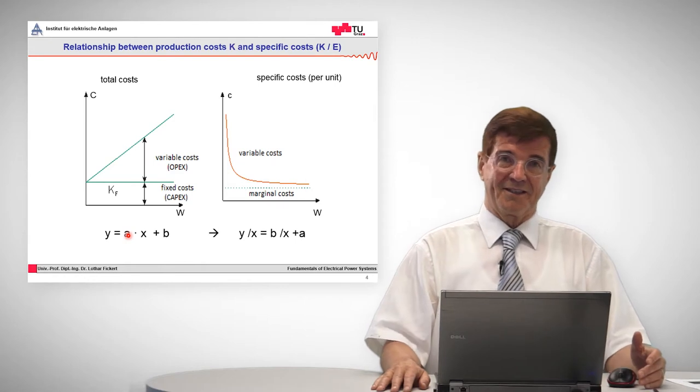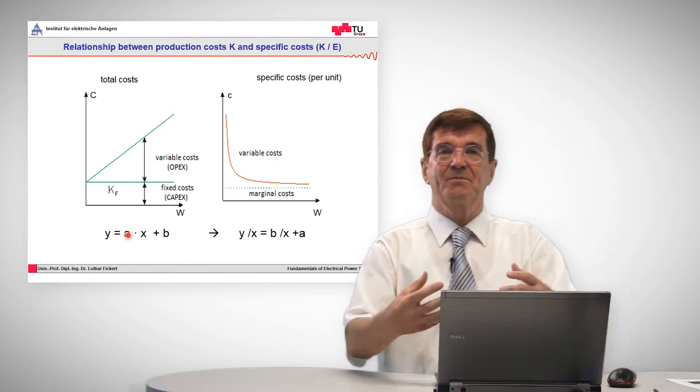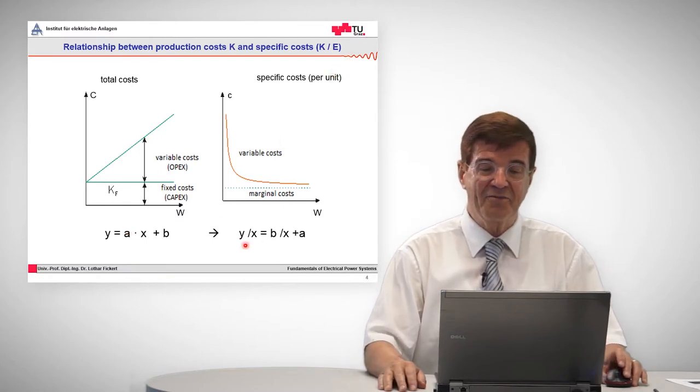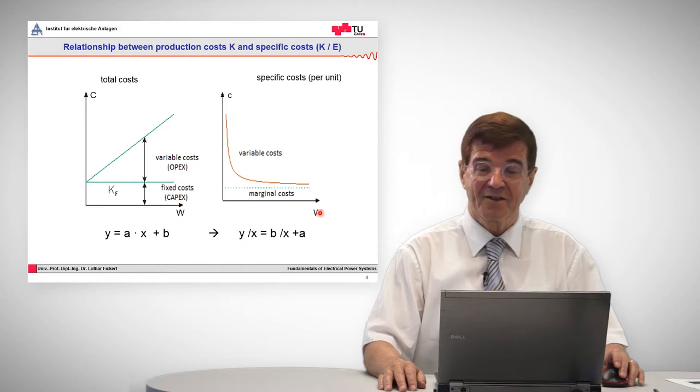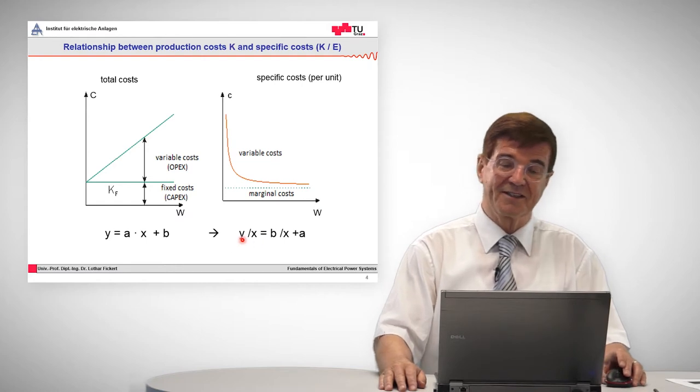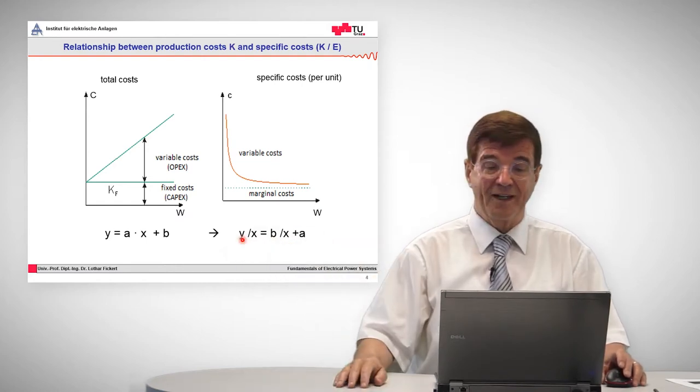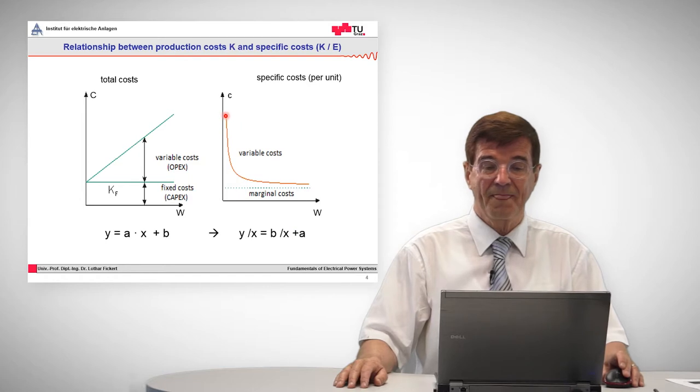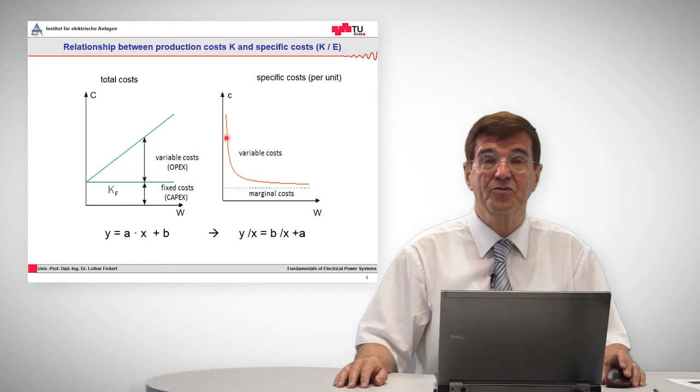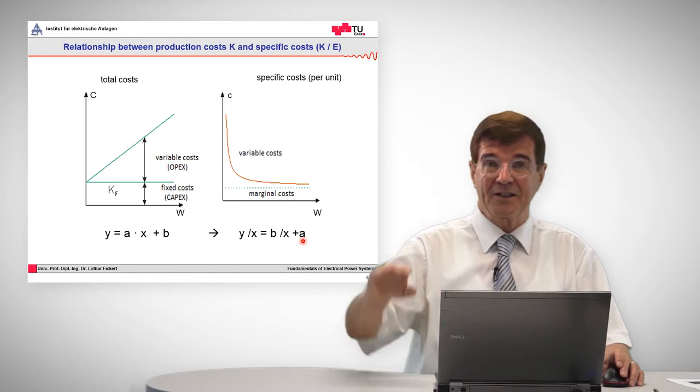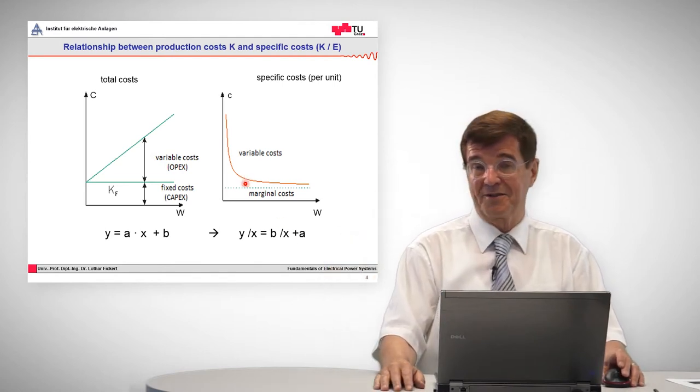What normally people are interested in is, what is the cost per kilowatt-hour? So this is the specific cost per unit. And the specific cost is given by the cost divided by the energy supplied. So if we divide this formula that we have here, the Y divided by X, that is a specific cost, we arrive at something that looks like a hyperbola. The hyperbola goes down very rapidly, but is very high for low turnover, and it has a fixed offset. So the fixed offset is the proportional cost. But on top of that, you have always these variable costs.